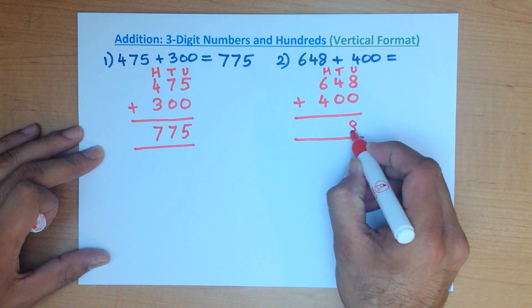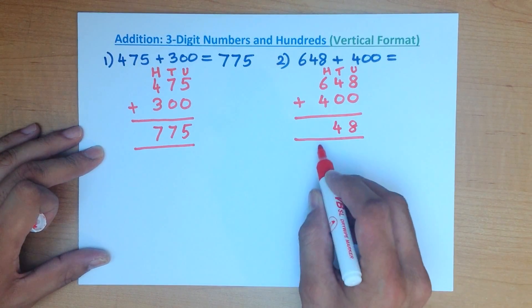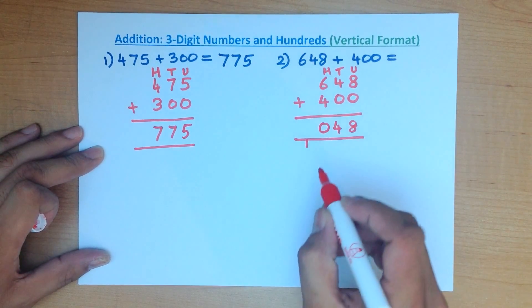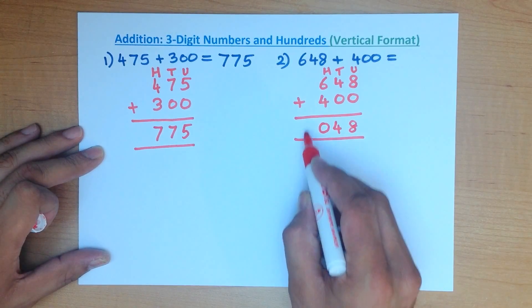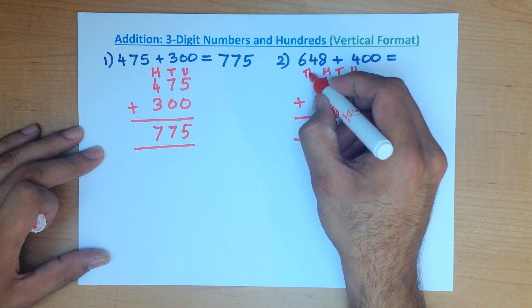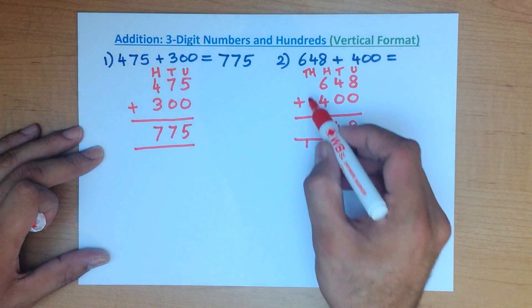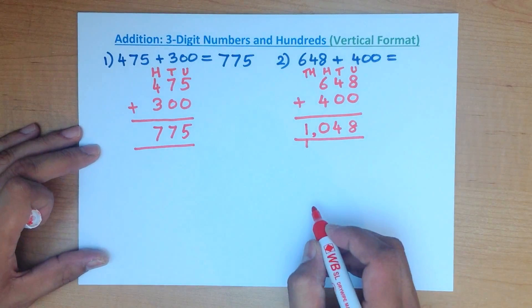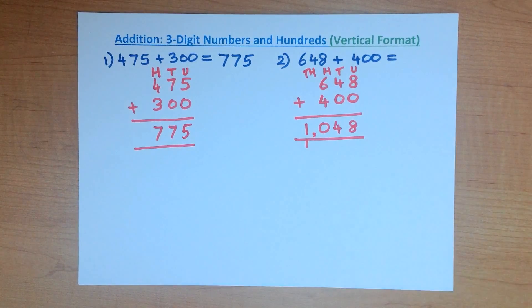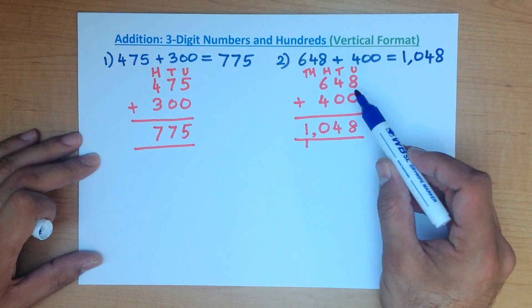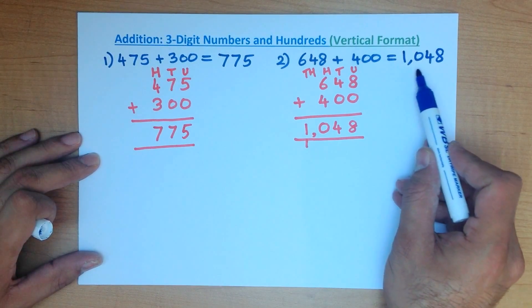8 plus 0 is 8. 4 plus 0 is 4. The hundreds column: 6 plus 4 is 10. How do we write that down? We write it down like this — this one becomes part of the new column. What is the new column called? We've got units, tens, hundreds — this one is the thousands. There are no thousands in the first or second number, but there is one here. We could even put a little comma down there just to separate the thousands from the hundreds — it makes it easier to read. 648 plus 400 is 1048.